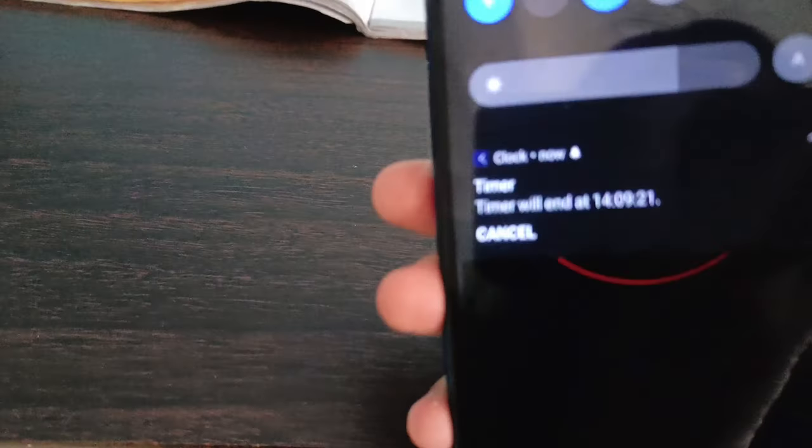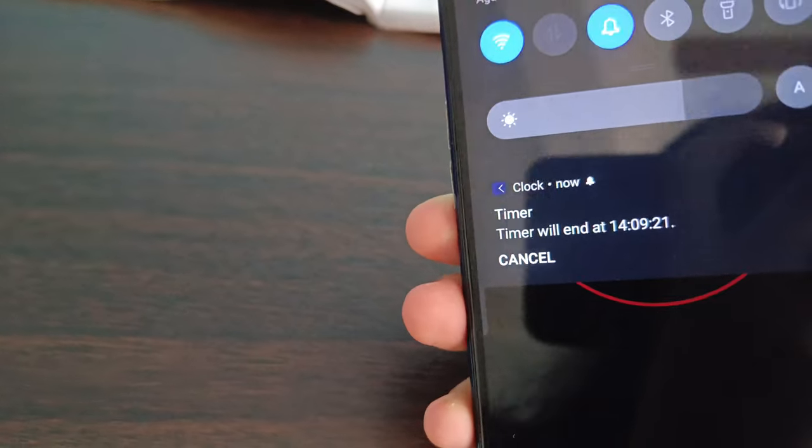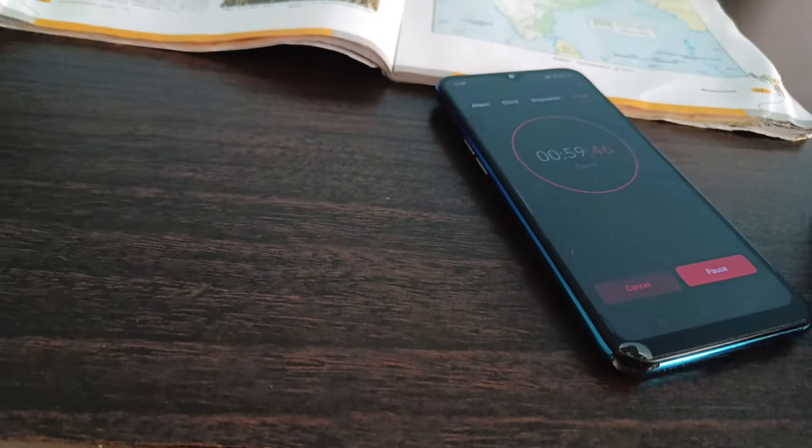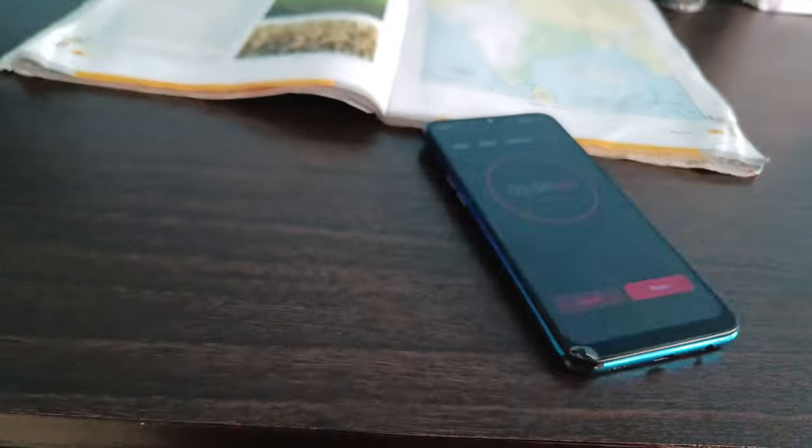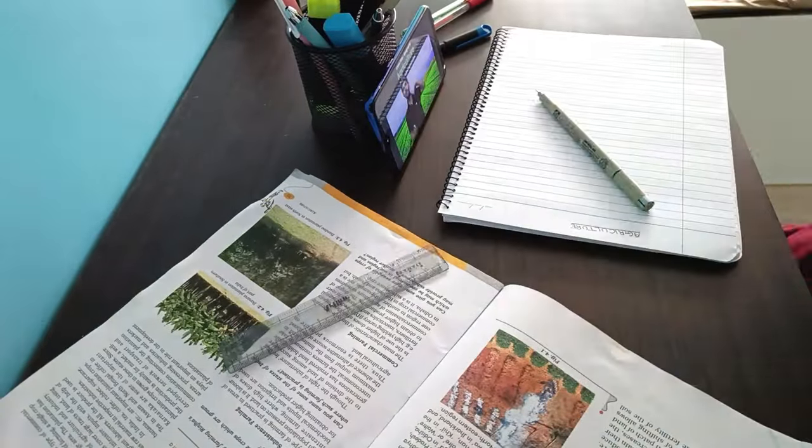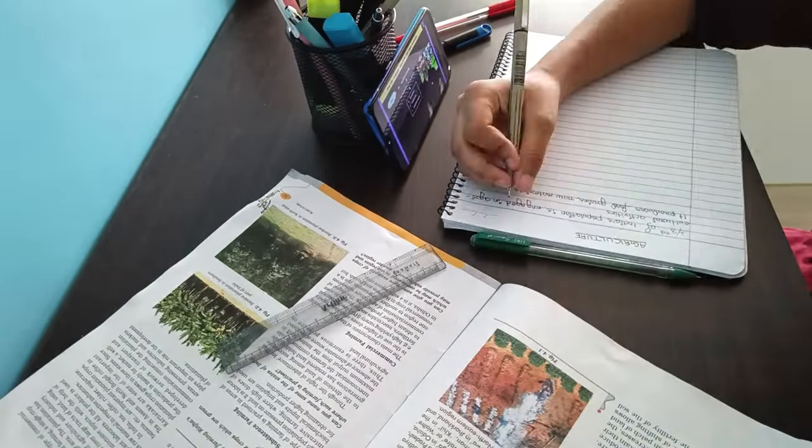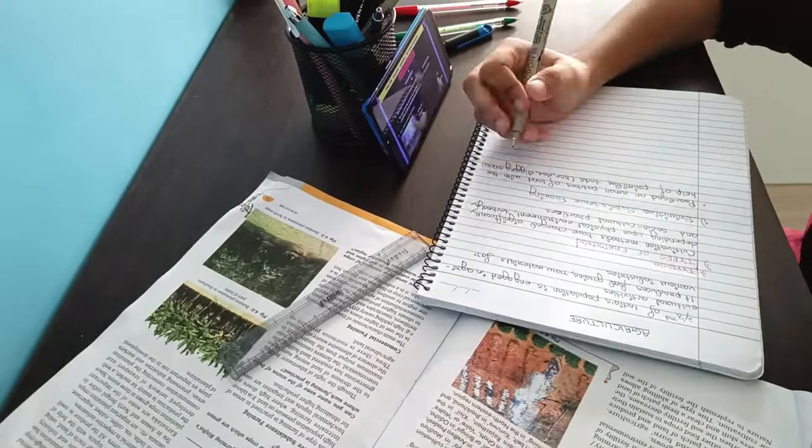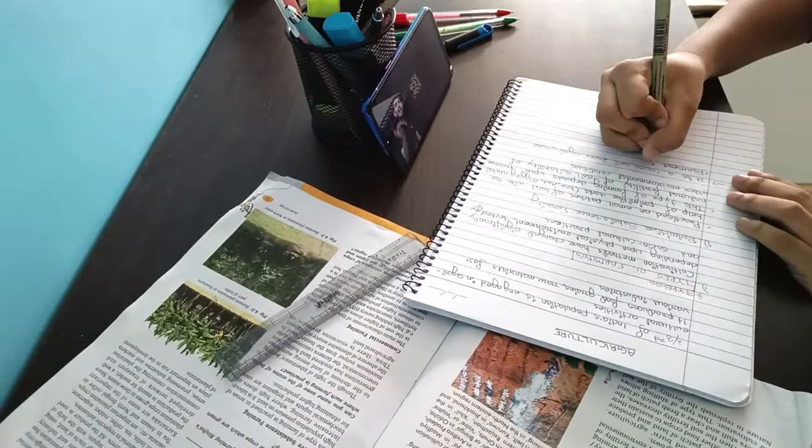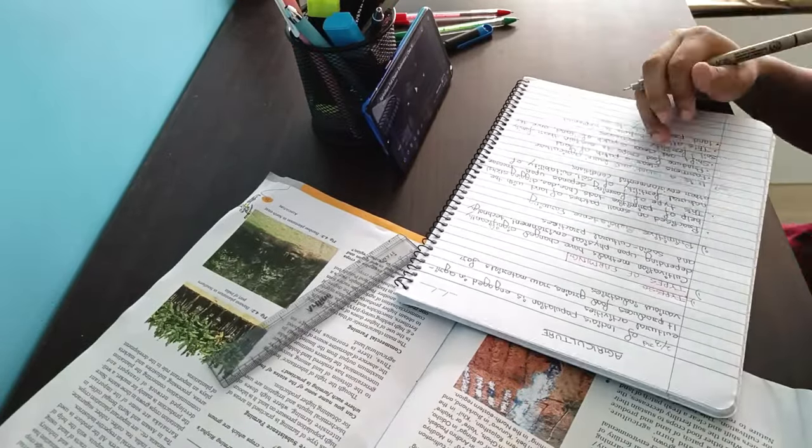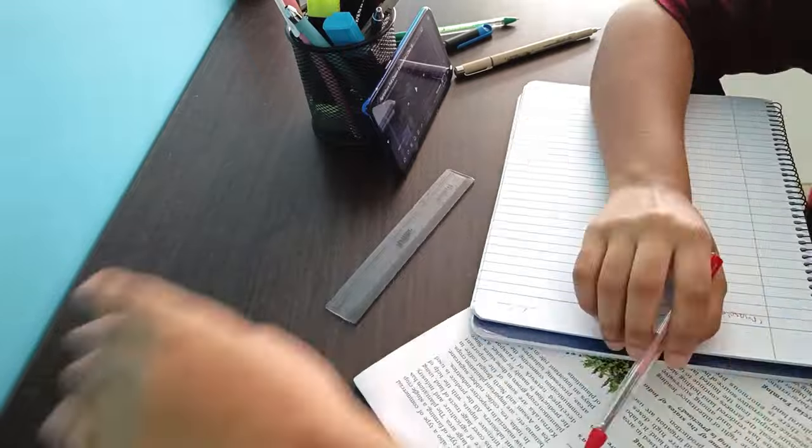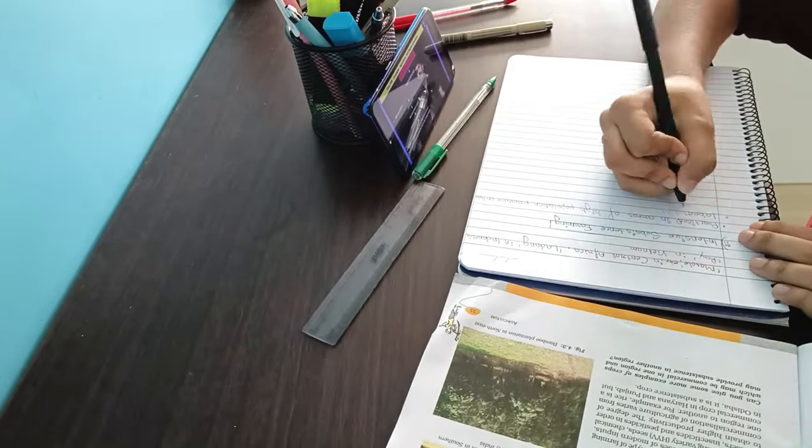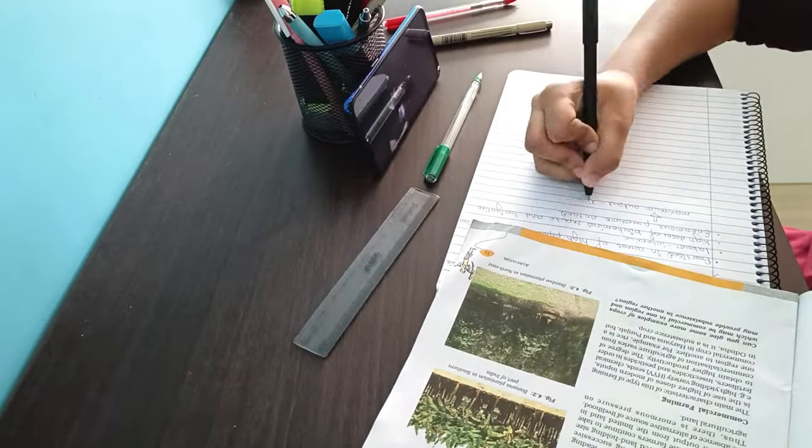Even if you don't make notes for every single chapter of SST, I'll still suggest you to make at least short notes of this particular chapter. In this we have to memorize all the names of the crops, the states in which they are grown, the particular climate they need, rainfall, cropping pattern, etc.